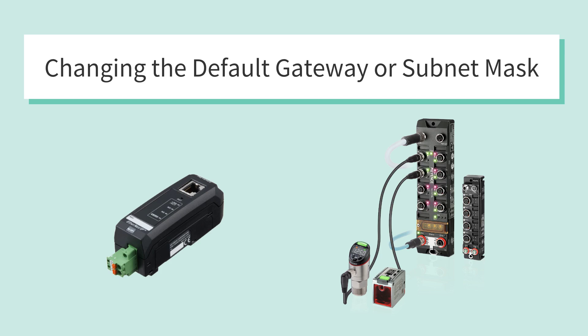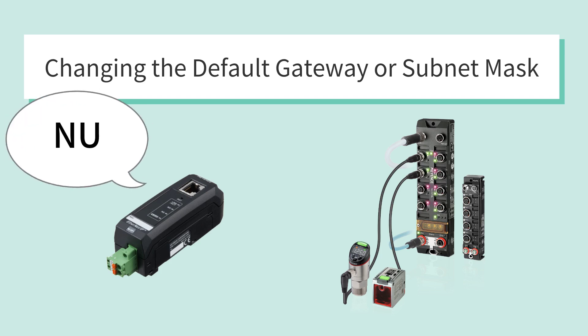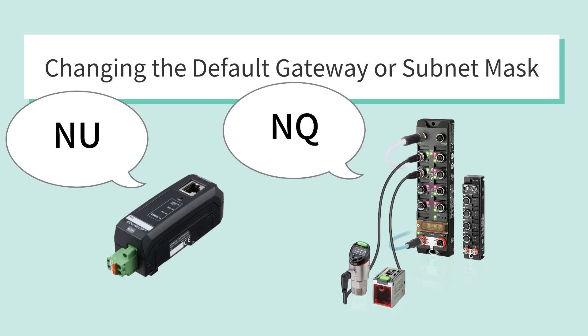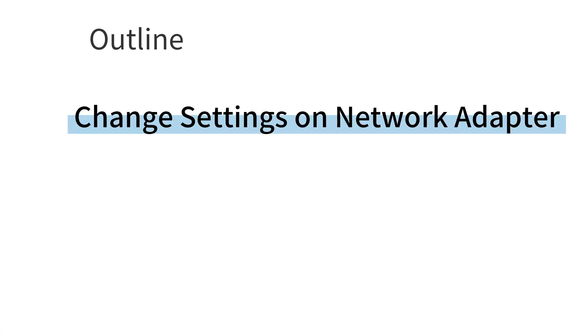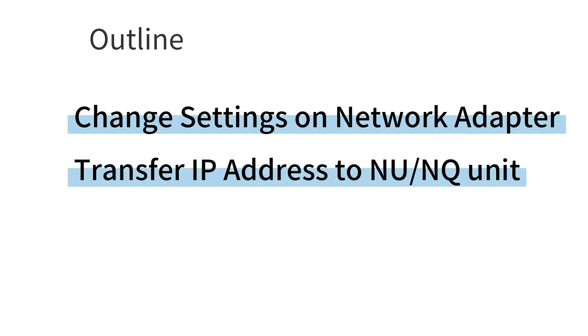This video will guide you through changing the default gateway or subnet mask on units from the NU series or the NQ series. To change the default gateway or subnet mask, we will need to make those changes to the network adapter connected to the NU or NQ unit and transfer an IP address over to the unit for the changes to take effect.